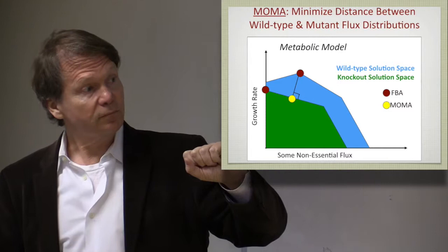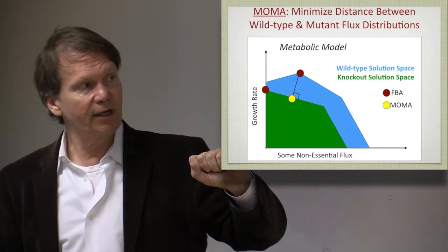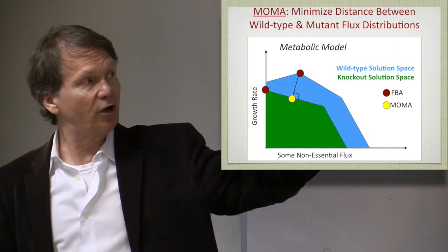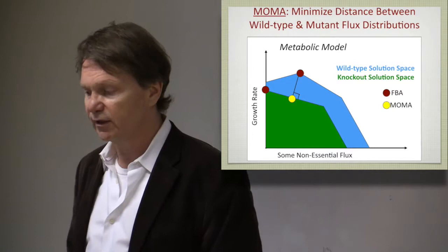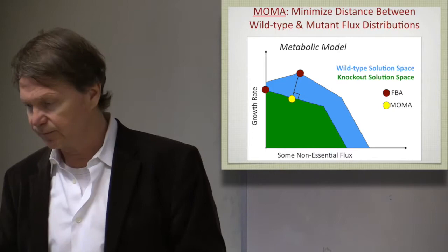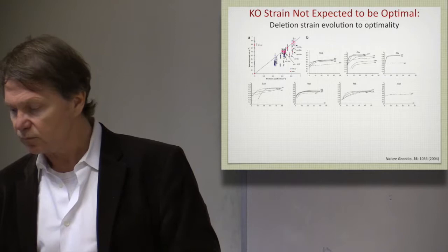And so if you were to get a phenotype from a gene knockout and hit that yellow dot, then subsequent evolution of that dot should evolve it to the red dot within the green space. So there are two predictions that are embedded in here. First the yellow dot, and then that second red dot. So experiments have been done to address this, and they are shown here, where cellular growth rate is on the y-axis in these panels.